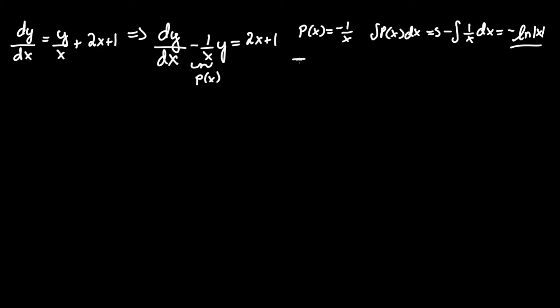The integrating factor I(x) or μ(x) equals e to the power of integral P(x)dx, which is e to the negative ln x. Before we simplify, we have to make sure there's nothing between e and ln since they're inverses of each other and can cancel.